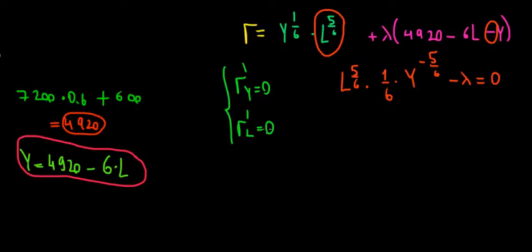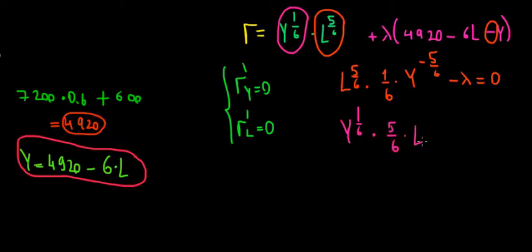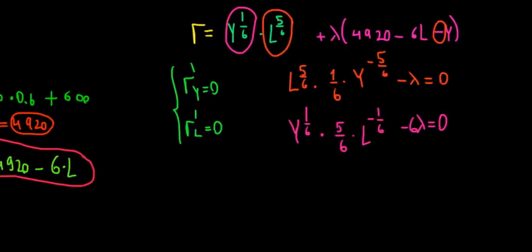For the second first-order condition, we differentiate with respect to l. Here l is the variable, so we keep y to the power of 1/6 as our constant. The derivative of l to the power of 5/6 is 5/6 times l to the power of minus 1/6. From the constraint term, differentiating with respect to l leaves minus 6 times lambda. So: y^(1/6) · (5/6) · l^(−1/6) − 6λ = 0.